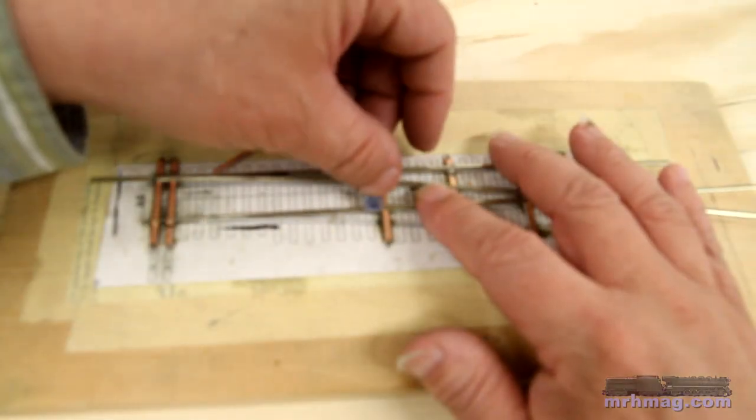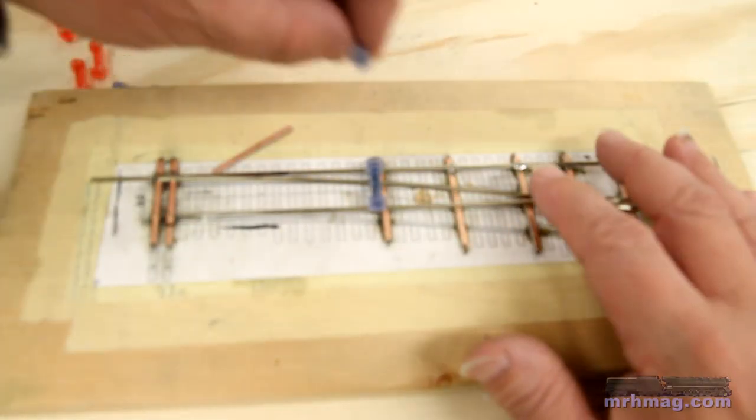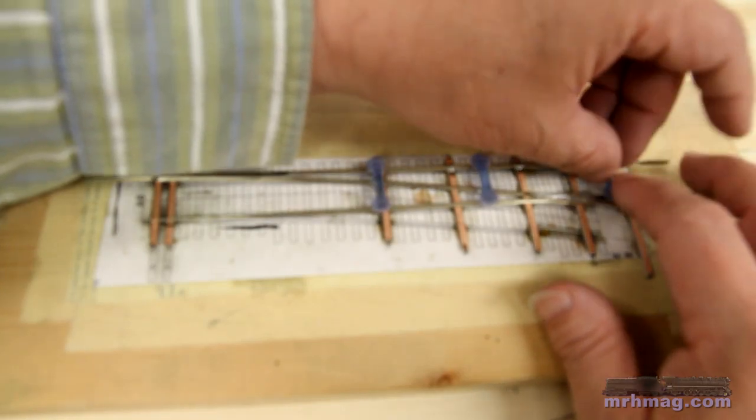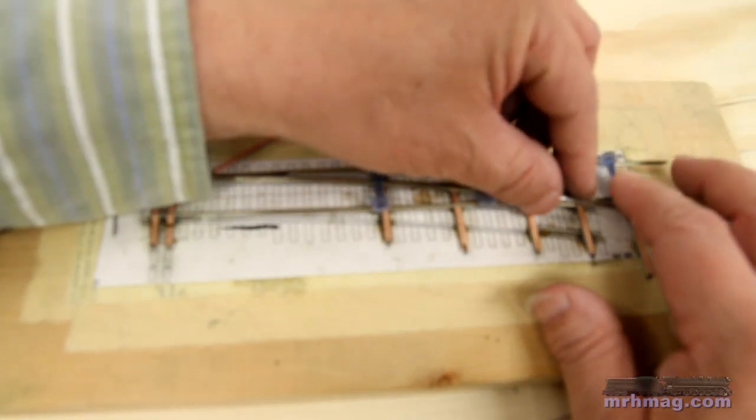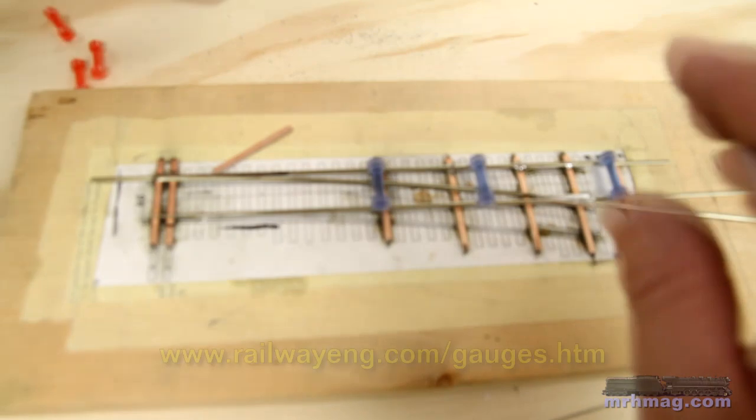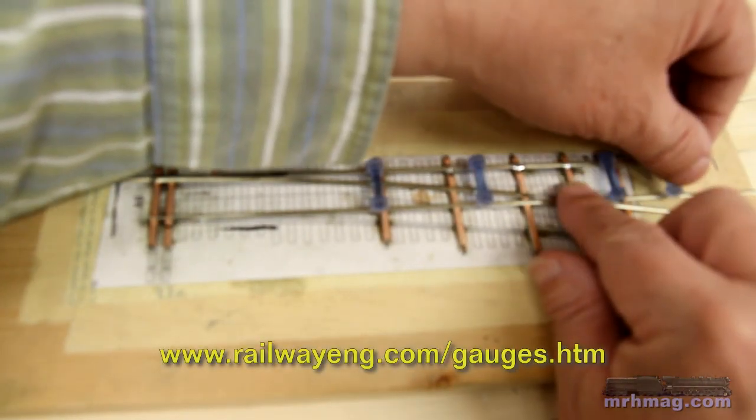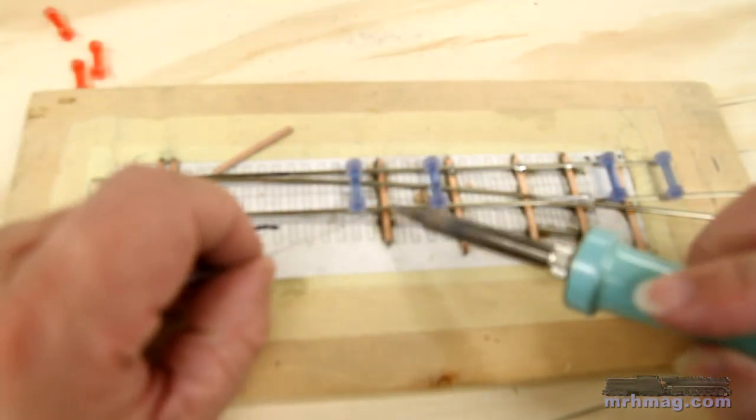Place the frog closure and point assembly on the PC ties, paying attention to locating the end of the switch points and the frog point correctly. I use several track gauges to hold the frog assembly in gauge with the straight stock rail. These gauges are rolly holders from Railway Engineering. Once the frog assembly is in place solder it to the PC ties.